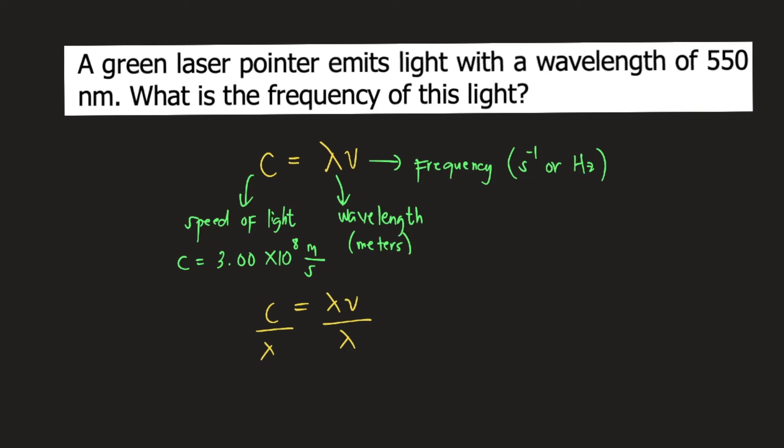Lambda would cancel on the right side, and our formula for frequency would be frequency equals C over lambda.